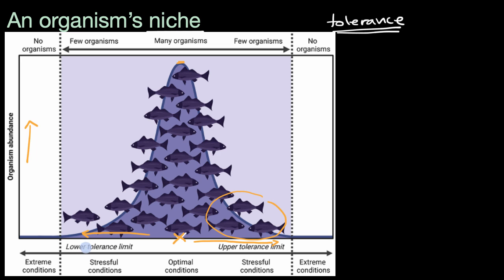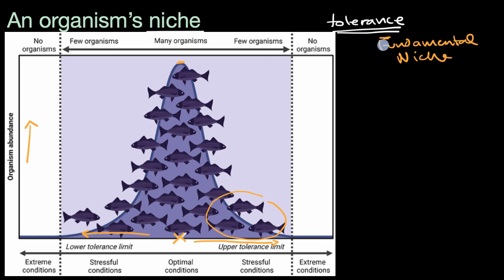When we think about abiotic factors — non-living factors like temperature or acidity — and consider where an organism can and cannot live, this is known as a fundamental niche. The fundamental niche is just where you could possibly find an organism. But we'll also talk about something known as a realized niche, which takes into consideration both abiotic and biotic factors — non-living and living — to determine where you are actually likely to see the organism.